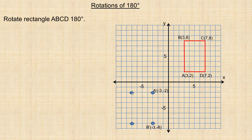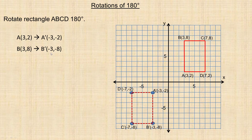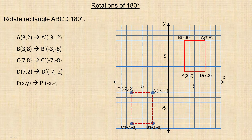So these are the coordinates of A, B, C, and D after rotation. Notice that A (3, 2) changed into A prime (−3, −2). B (3, 8) changed into (−3, −8). C (7, 8) changed into (−7, −8). And D (7, 2) became D prime (−7, −2). In each case, the x-coordinate just changed its sign and the y-coordinate changed its sign. This is the rule for rotating 180 degrees: the point (x, y) becomes (−x, −y). If a coordinate was already negative, it simply becomes positive — it just gets the opposite sign.